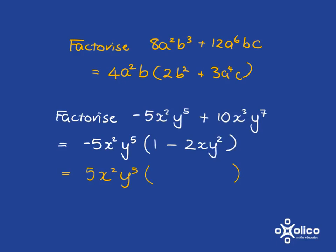Now, as I said, I could also have chosen, and it would be equally right, 5x squared y to the 5 as my highest common factor. And so then what would I get? Well, I'm asking myself, this multiplied by this must get me back here.